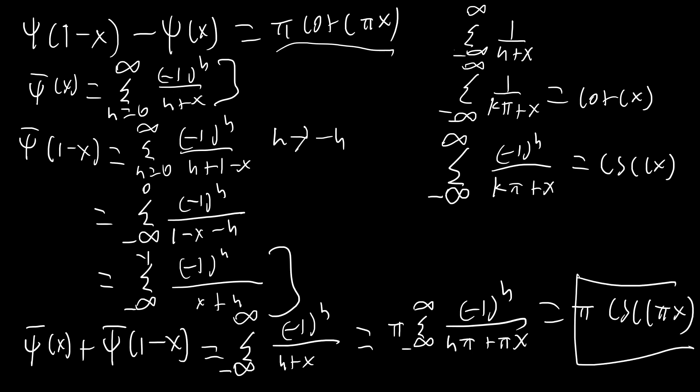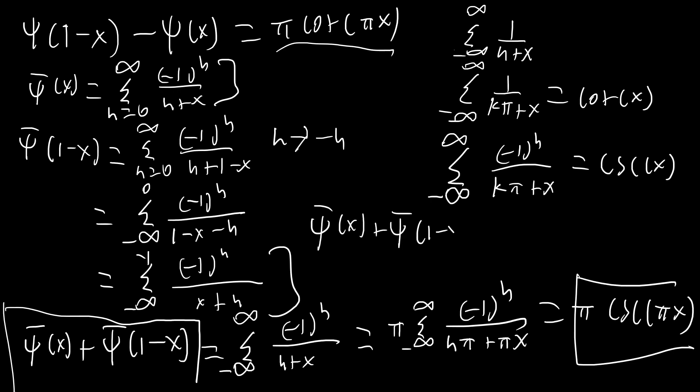That sum equals pi times the sum from negative infinity to infinity of negative one to the n over n pi plus pi x, which is pi cosecant of pi x. So our reflection formula is di gamma bar of x plus di gamma bar of one minus x equals pi cosecant of pi x — very similar to the di gamma function, but with cosecant instead of cotangent. Interestingly, this also equals gamma of x times gamma of one minus x, so the reflection formula for di gamma bar and for the gamma function give the same result.